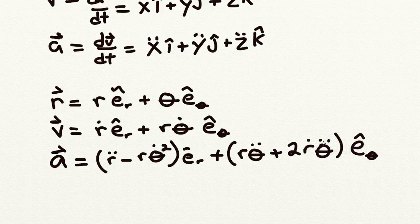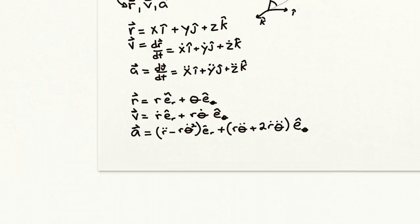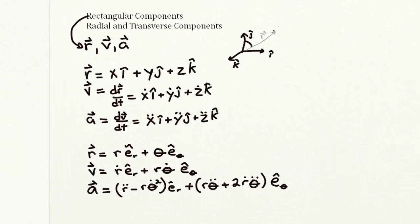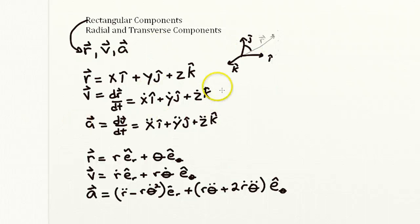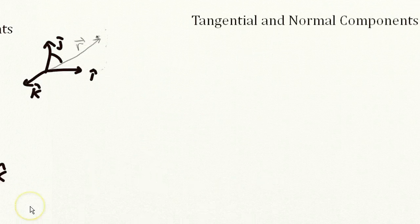So you can see why the choice of, why the coordinate system choice is important. In some cases, the choice might make the calculation easier in one set of bases. For instance, this radial transverse components, but in other cases, it's probably much easier to do it in a rectangular component.